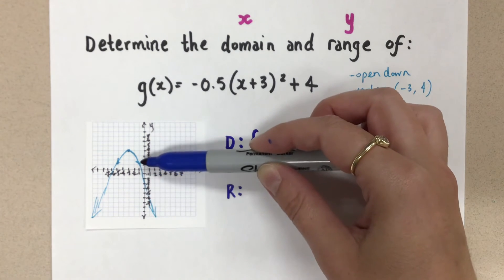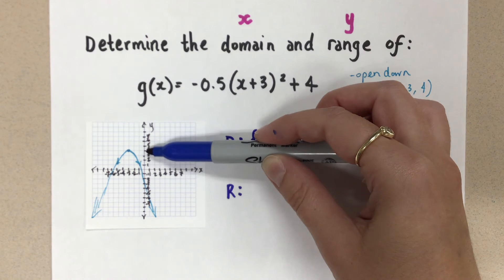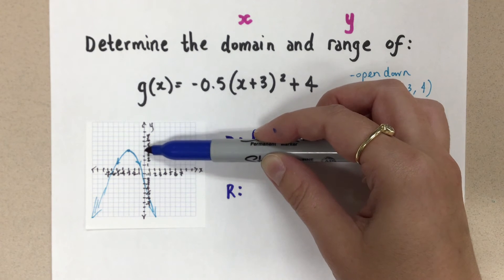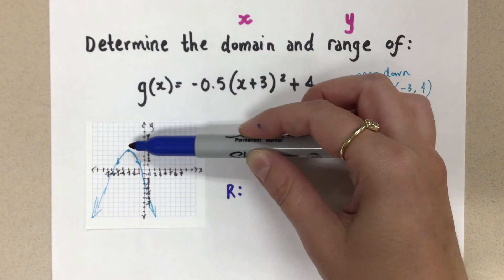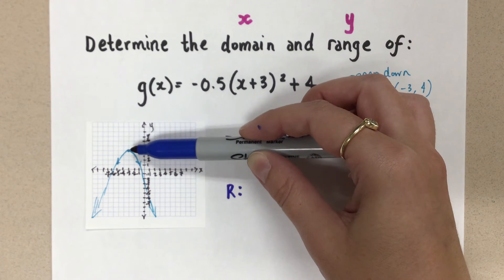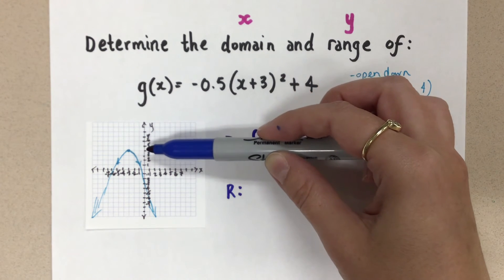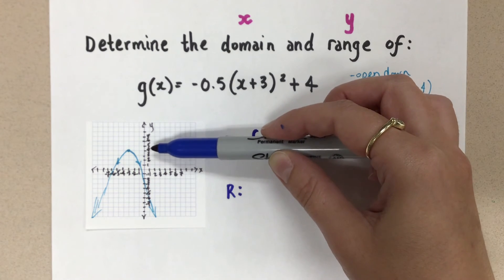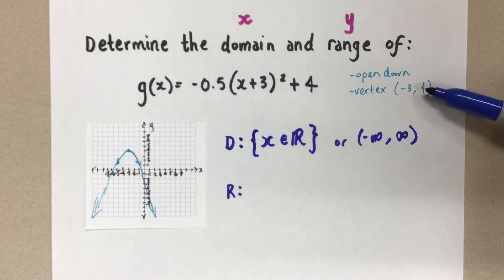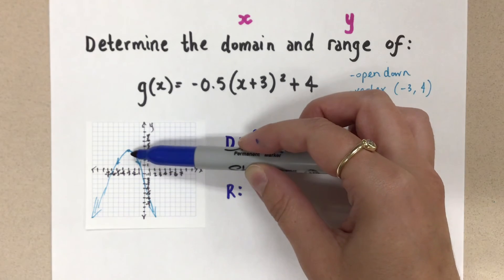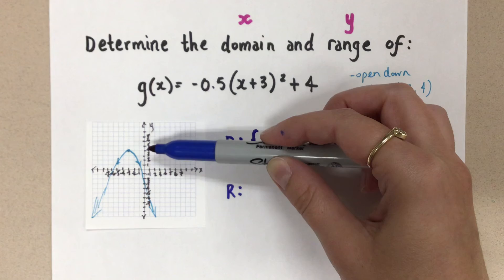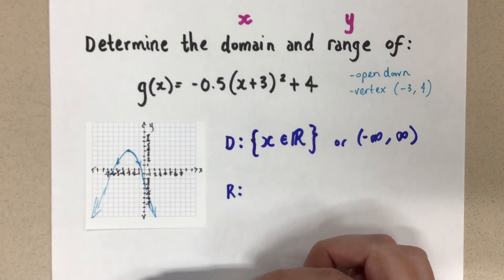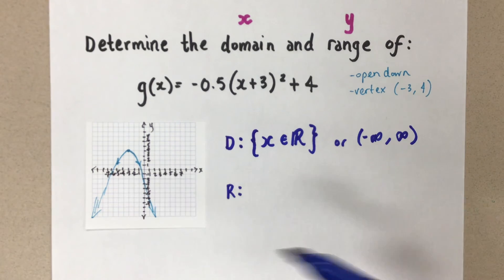There is a point, though, right here, where the y values are no longer going to be touched. Do you see that? Because of that maximum optimal value of this parabola. And that value is at y equals 4. And that's why we needed to have the vertex that we found here. So all of the y values for this particular function will be 4 or less. And that's our range.